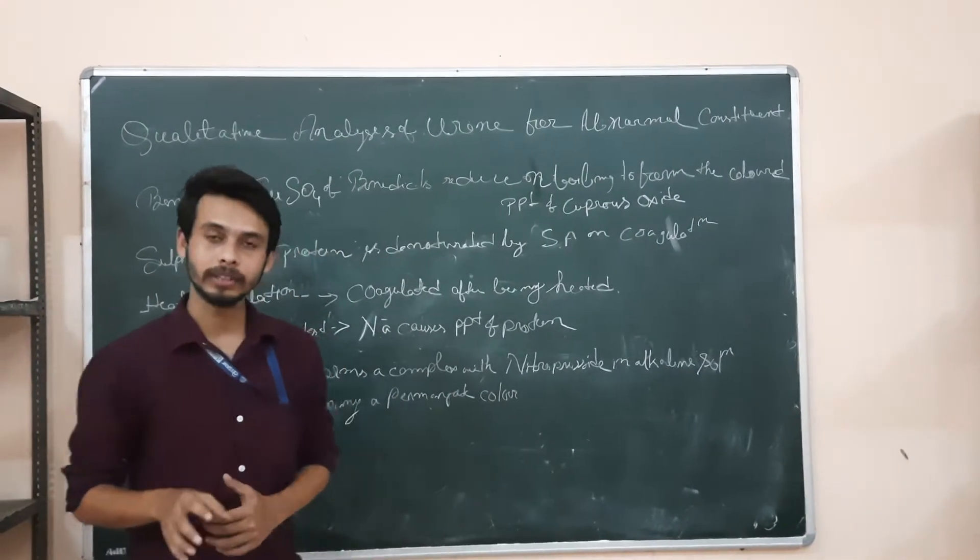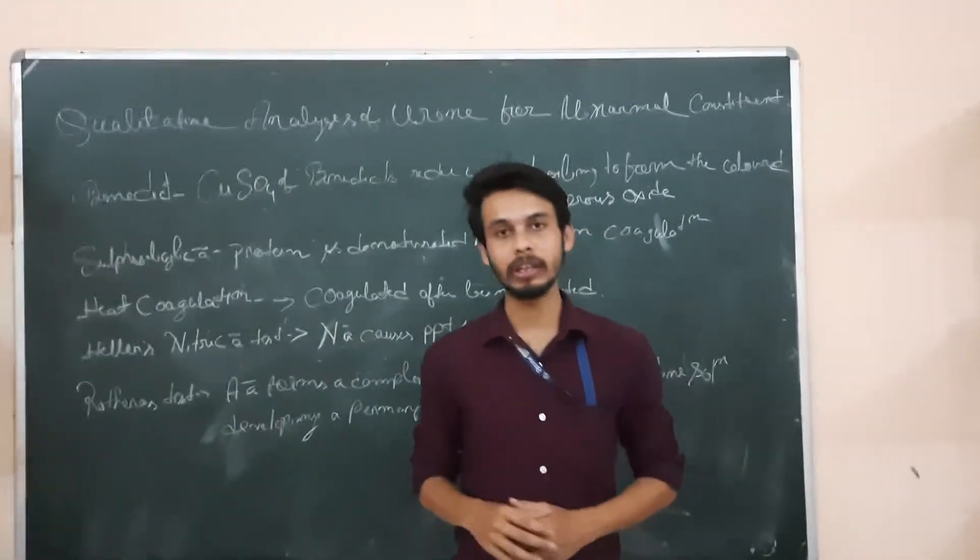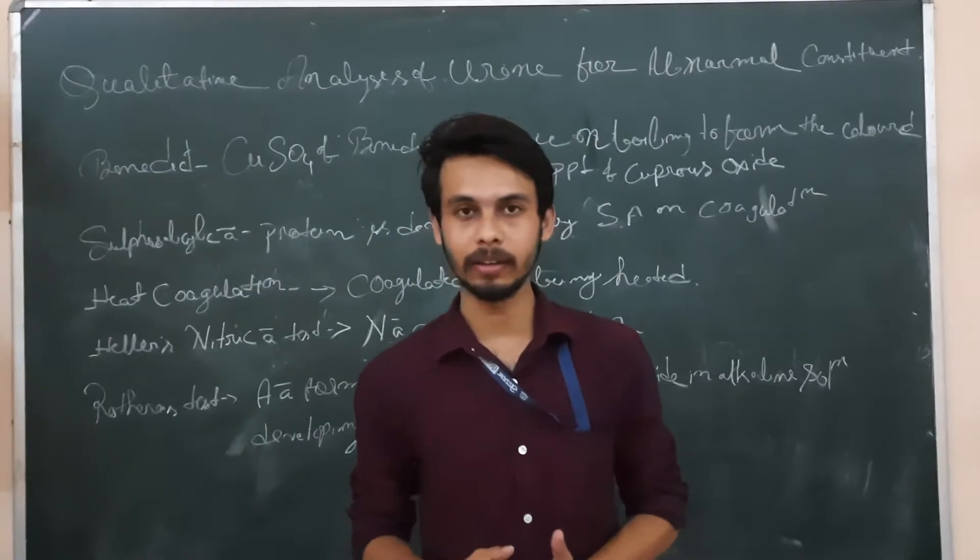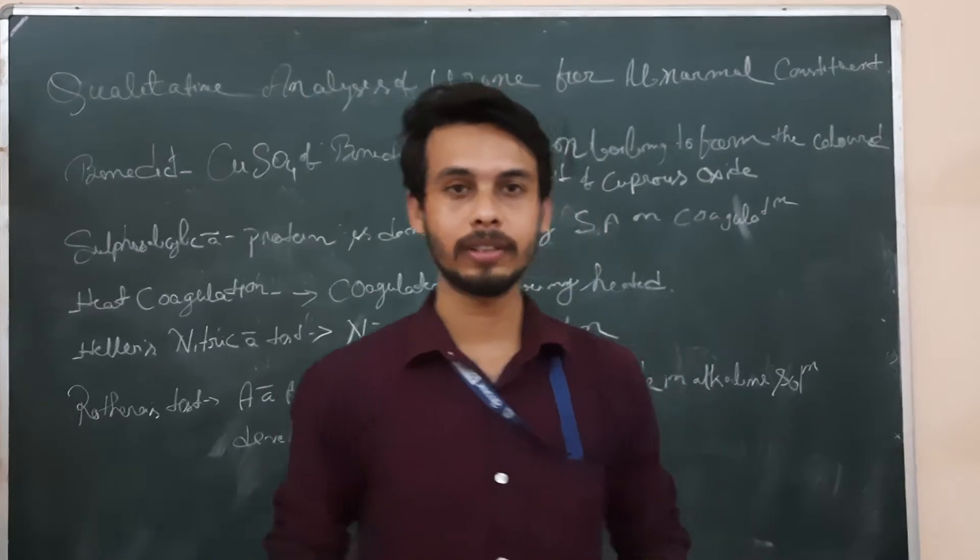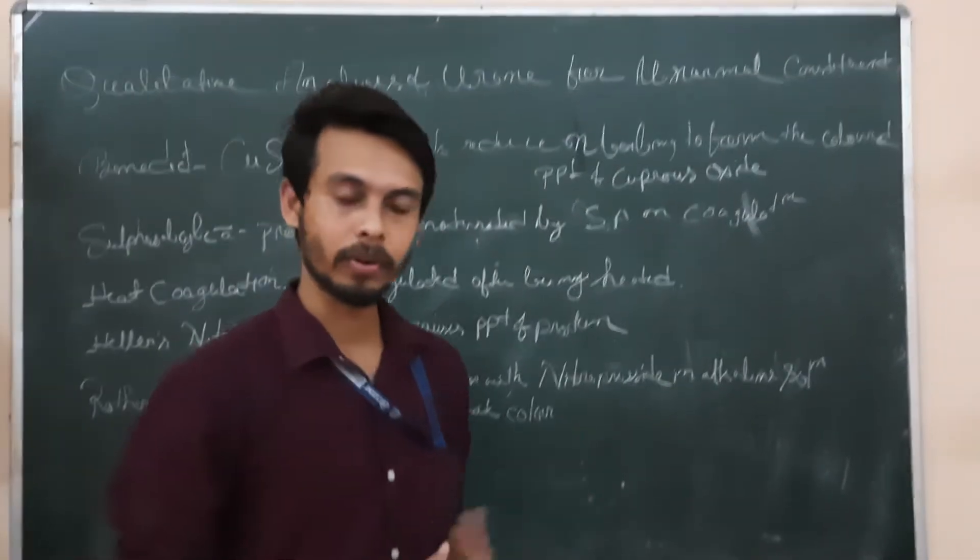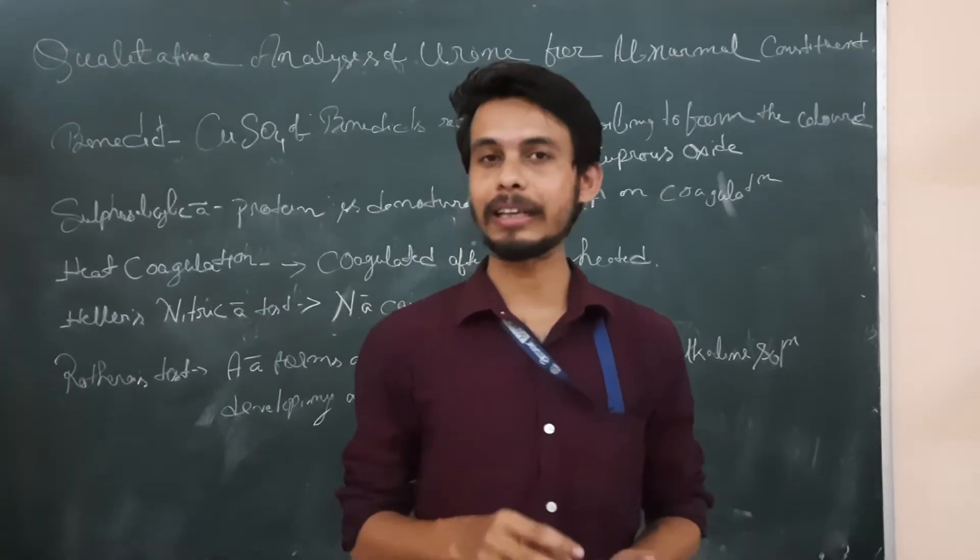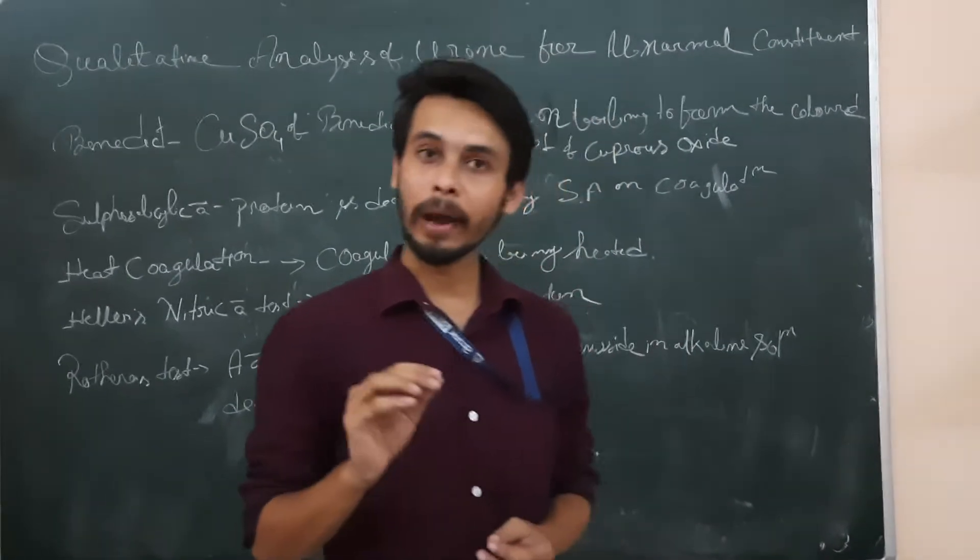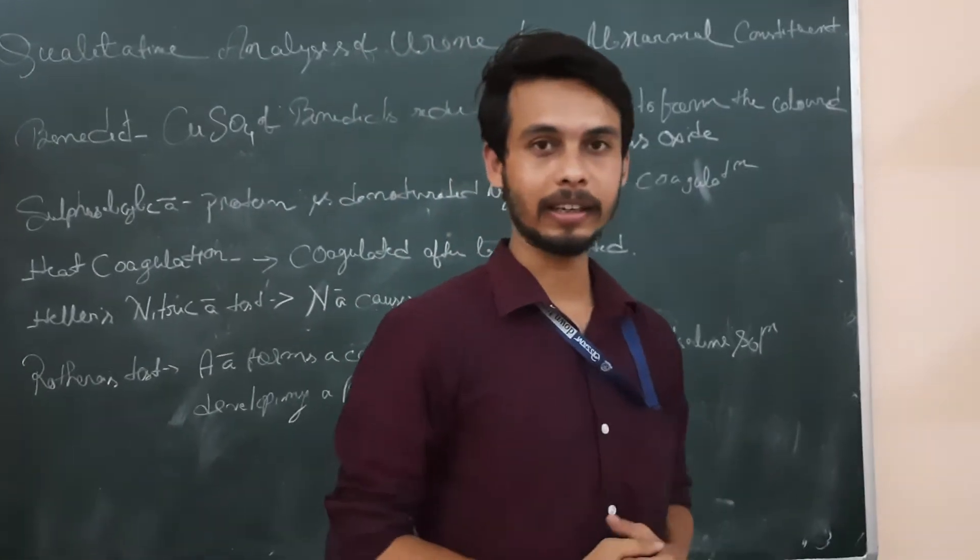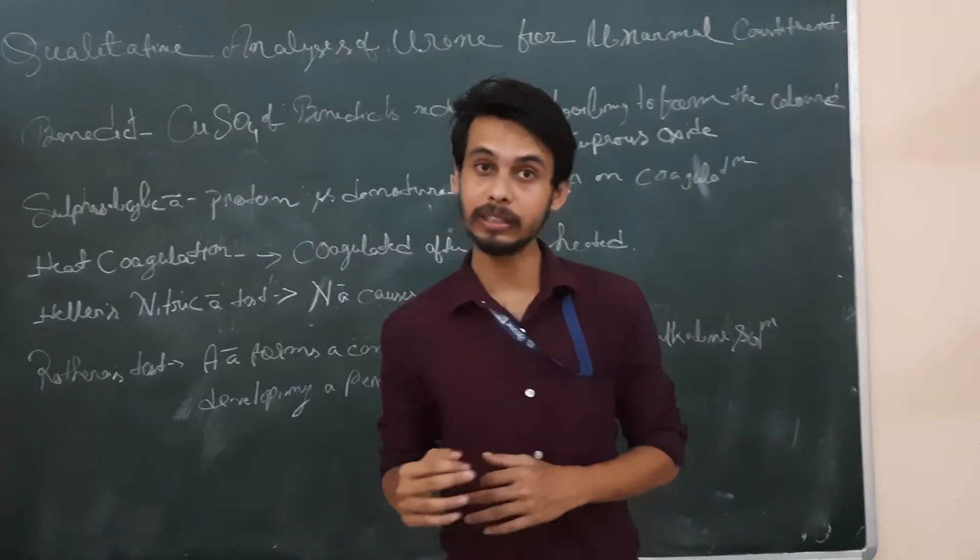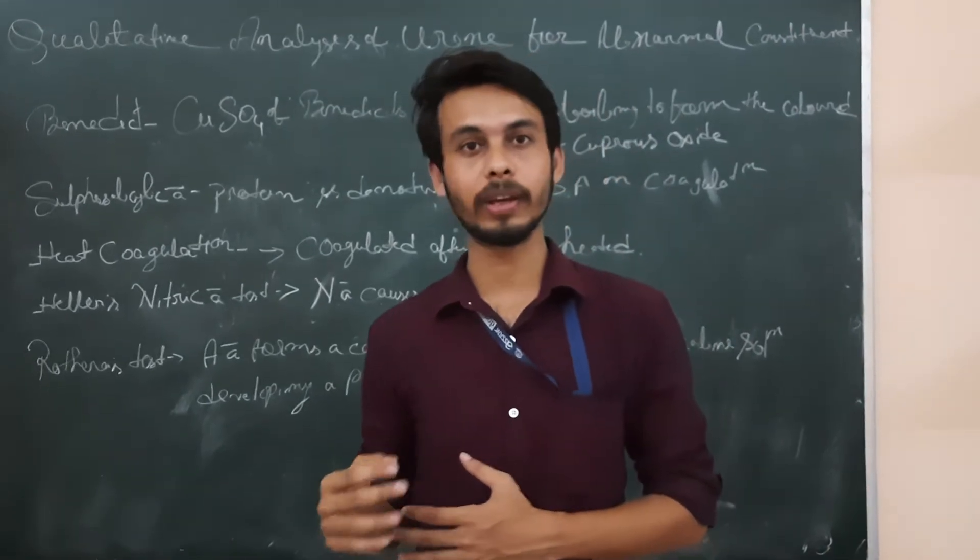Some substances which are not present in easily detectable amount in urine, but are present in some conditions like disease conditions are known as abnormal constituents of urine. What it means is that these are present in human body, in urine, but in very minute quantity. So which are not easily detected, we cannot easily detect that substance. But in some disease conditions, the concentration of that abnormal constituent will be high and we can detect that one.